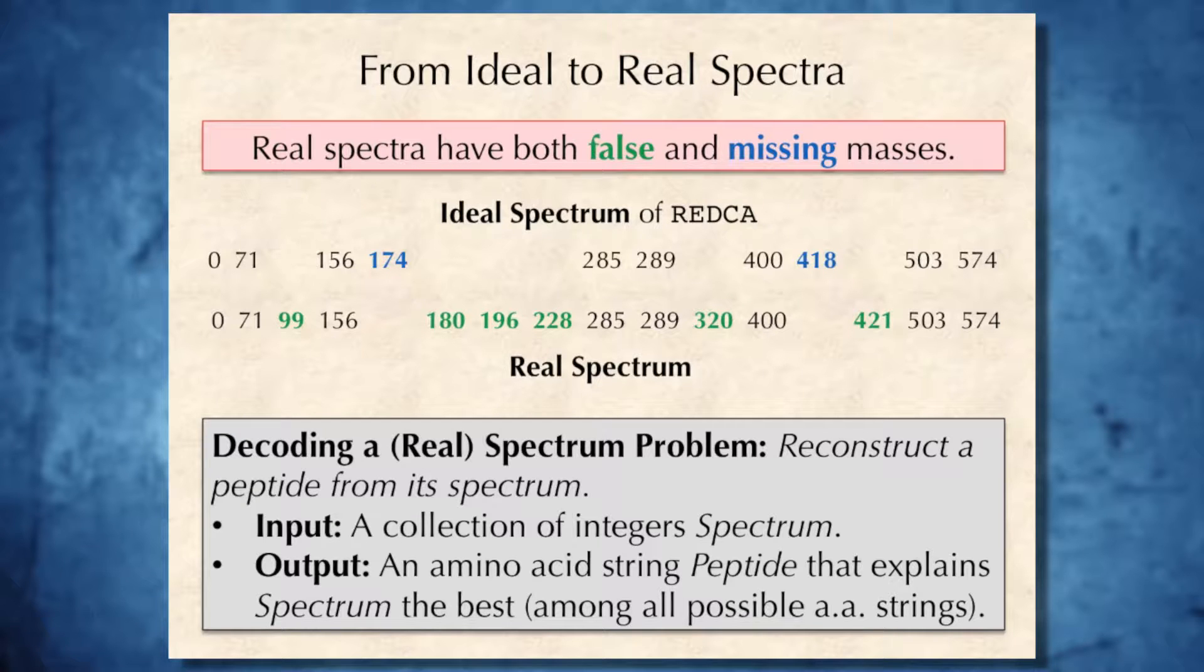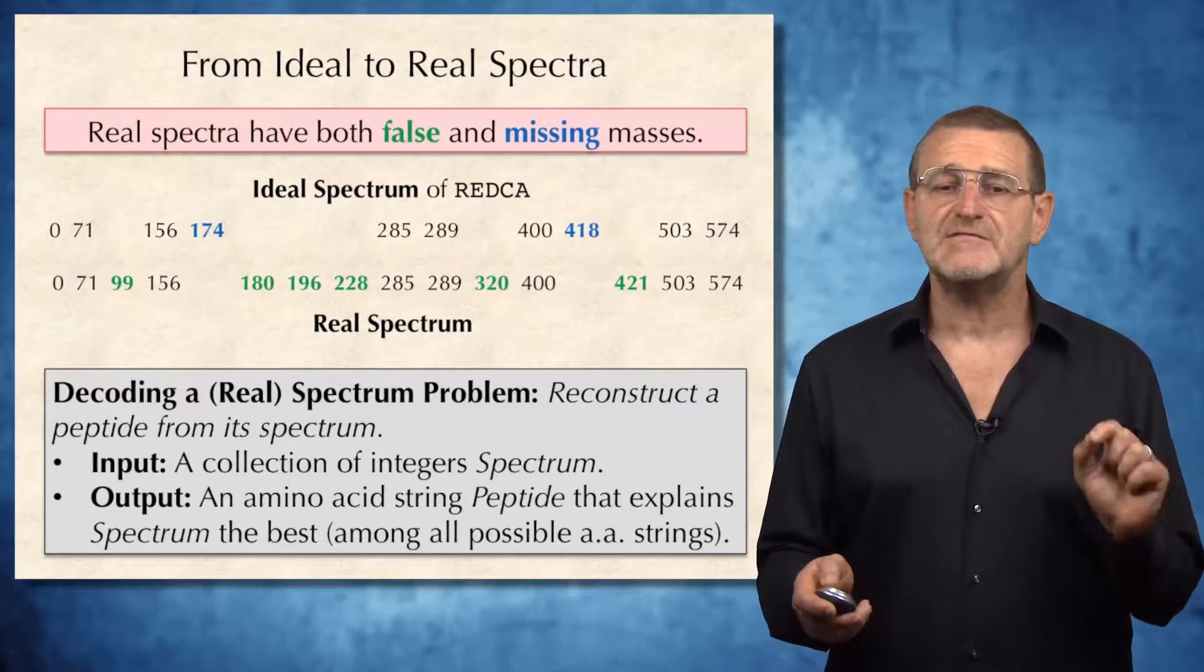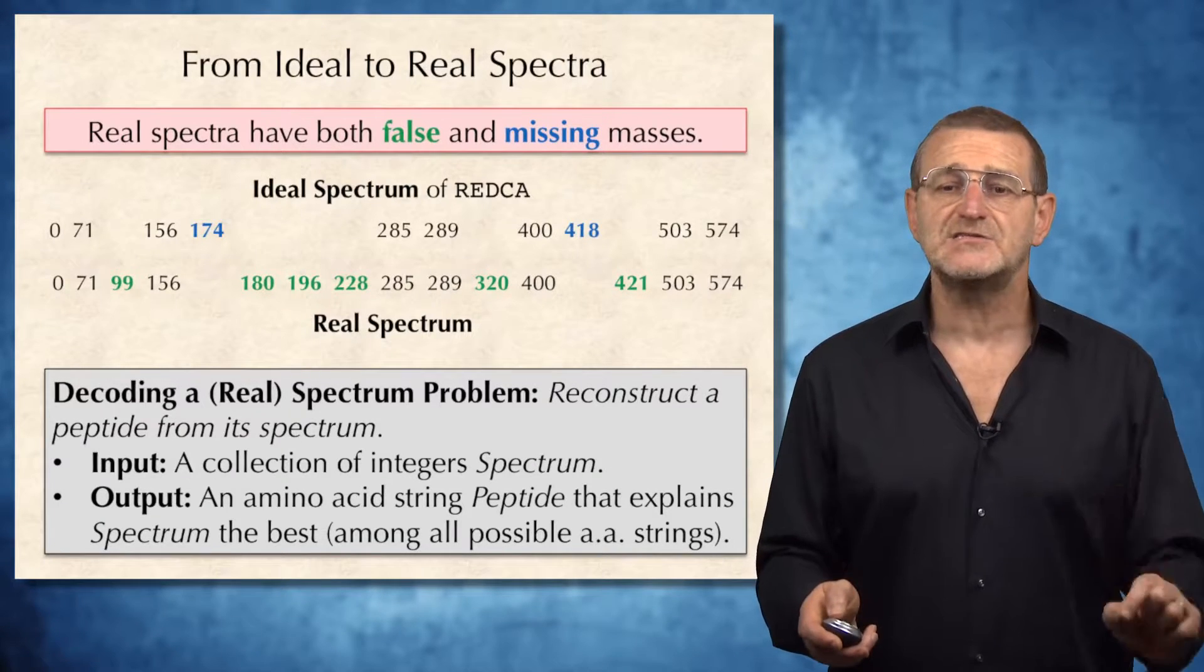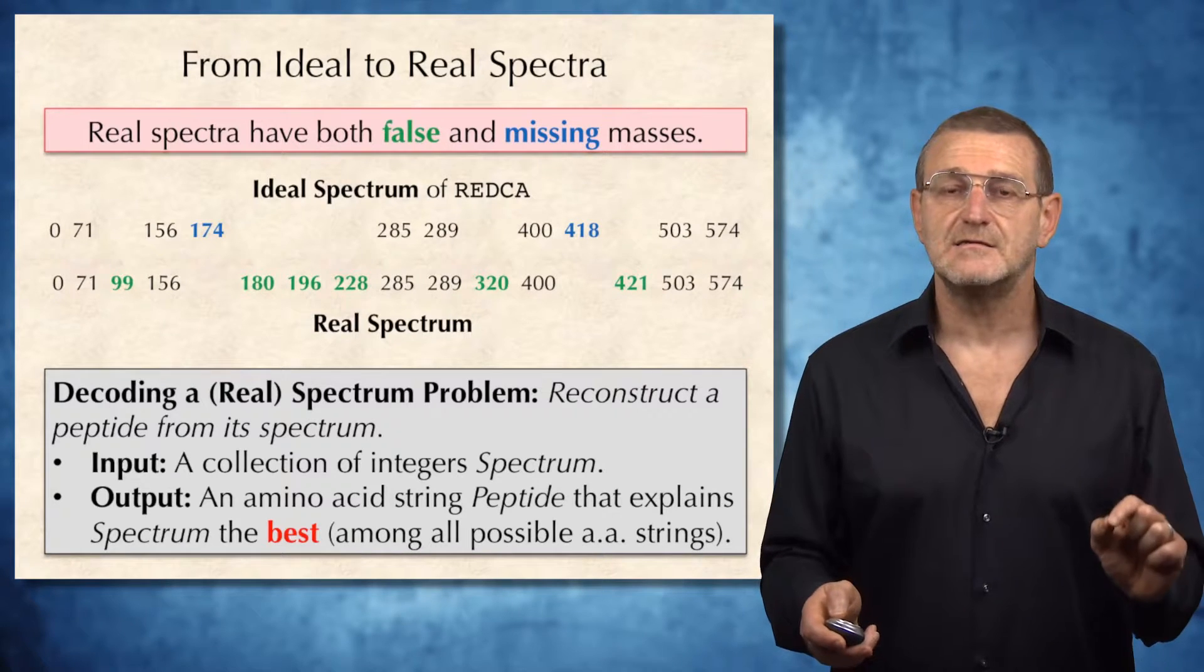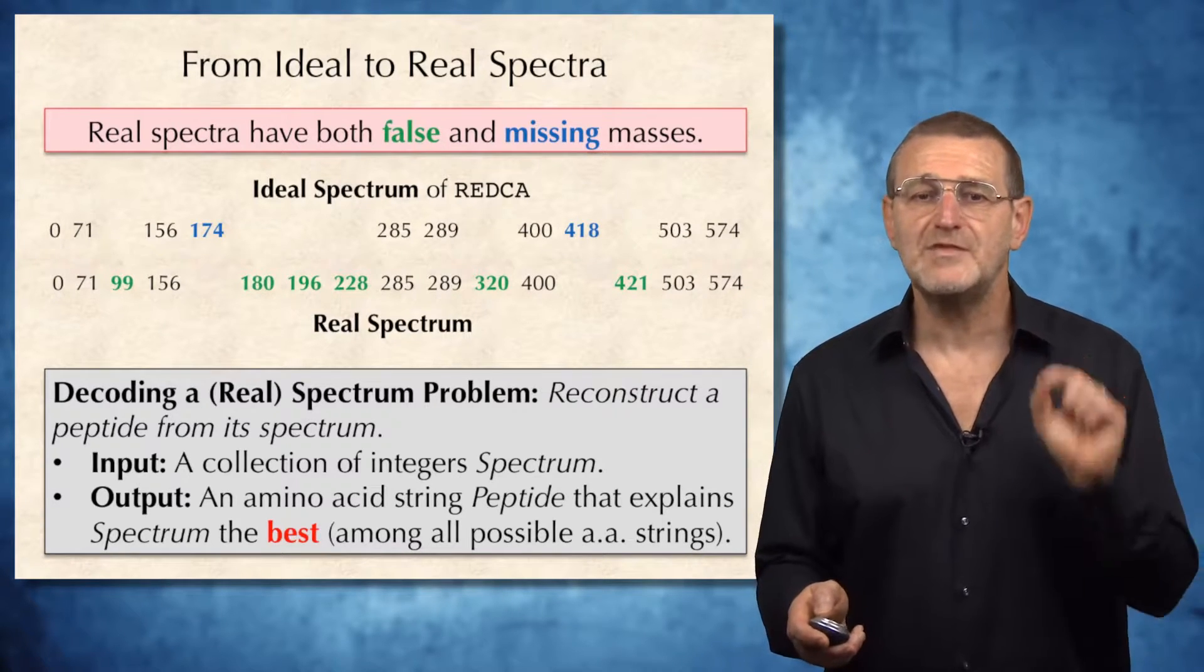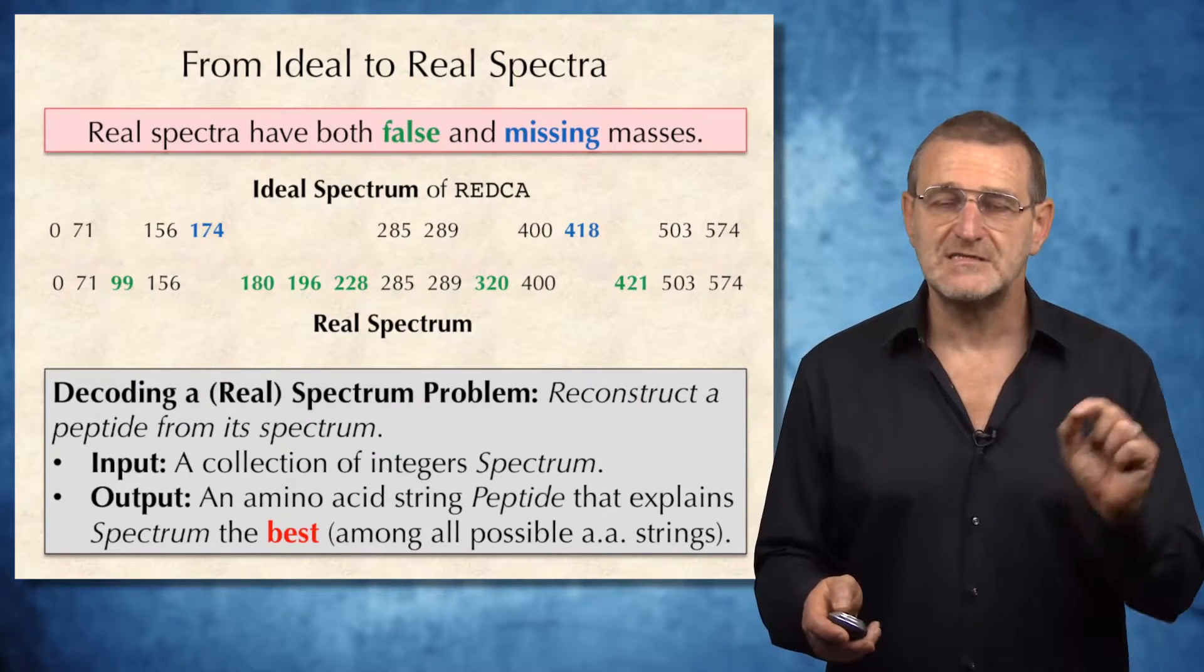That we will consider in the next lecture. Important thing about decoding a real spectrum is that its objective is to find an amino acid string peptide that explains spectrum the best. But what does it mean to be the best peptide explaining the spectra? We will learn about this in the next segment.